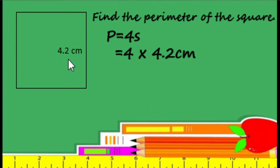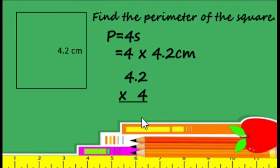So this is our side. Now we are going to write the numbers in column form. So we write 4.2 times 4 vertically. And then second step, we are going to multiply the numbers as if we are multiplying whole numbers. So 4 times 2 is equals to 8. 4 times 4 is equals to 16.